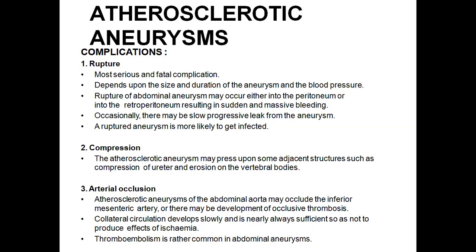Compression: the atherosclerotic aneurysm may press upon adjacent structures such as the ureter and vertebral bodies, causing associated symptoms — difficulty in urination or neurological changes due to compression of the vertebral bodies. Atherosclerotic aneurysm of the abdomen may also occlude the inferior mesenteric artery, leading to occlusive thrombosis. Collateral circulation develops slowly and is nearly always sufficient to prevent ischemia, so although there may be occlusion, compensation occurs through collateral circulation. Thromboembolism is rather common in abdominal aneurysm.